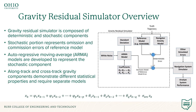A gravity residual consists of deterministic and stochastic components. In our work, we utilize ARMA models to represent the stochastic portion of the residual. As previously shown by others and revisited in this work, the along-track and cross-track components of the gravity residual have different statistical properties and thus require different models for each.